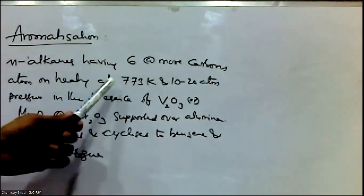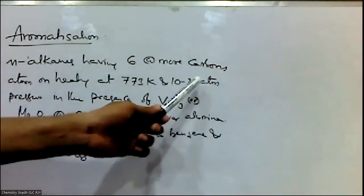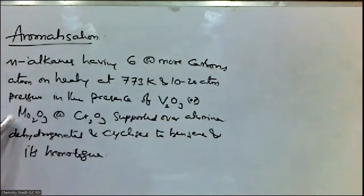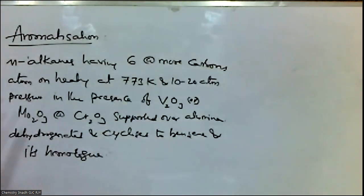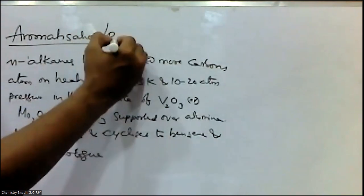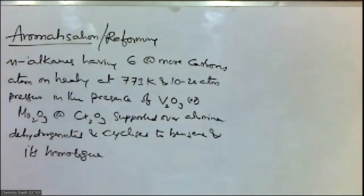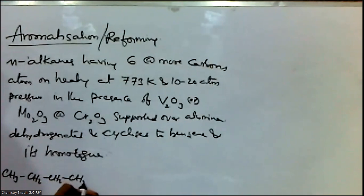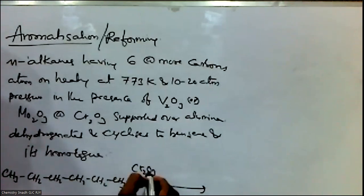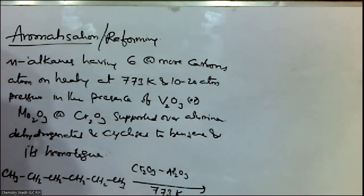When alkanes having 6 or more carbons are heated at 773 Kelvin and 10 to 20 atmospheres pressure in the presence of V2O3, Mo2O3, or Cr2O3 supported on alumina, they are first dehydrogenated and then cyclized to benzene and its homologous compounds. This reaction is called aromatization or reforming. For example, n-hexane (CH3-CH2-CH2-CH2-CH2-CH3) on treatment with Cr2O3 and Al2O3 at 773 Kelvin and 10 to 20 atmospheres pressure gives benzene.